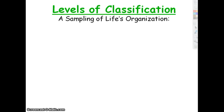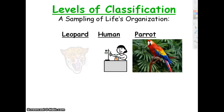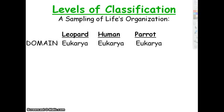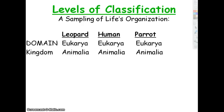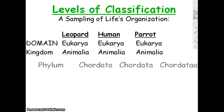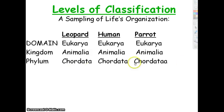Here are your levels of classification. I have three organisms — leopard, human, and parrot — to show you. We all belong to domain Eukarya, so we have that in common. Next comes kingdom — all three are in the animal kingdom. If we had a plant, it would be in Eukarya but then wouldn't match up because a plant would be in kingdom Plantae. Then phylum: since all three have backbones, they belong to phylum Chordata.